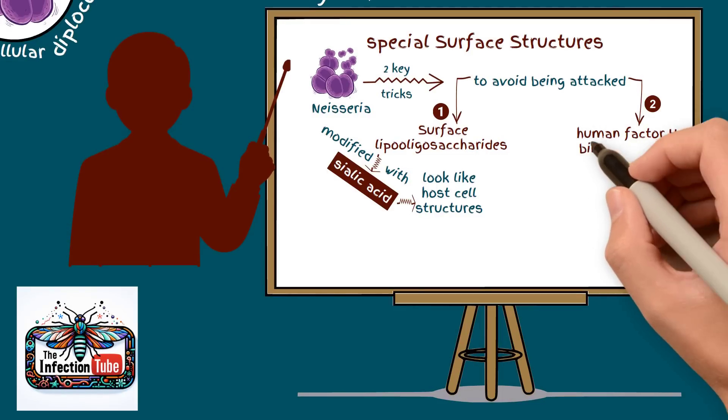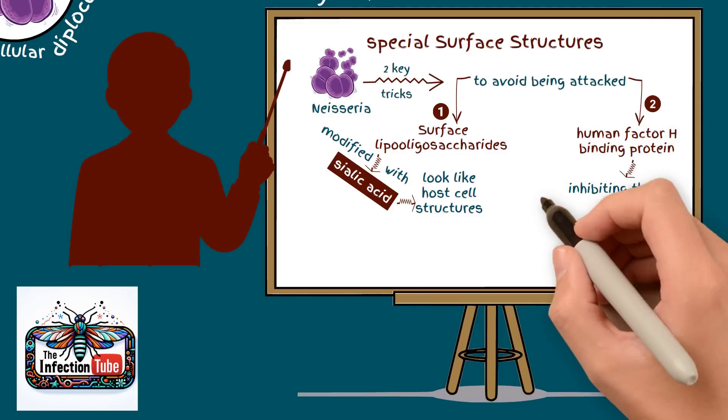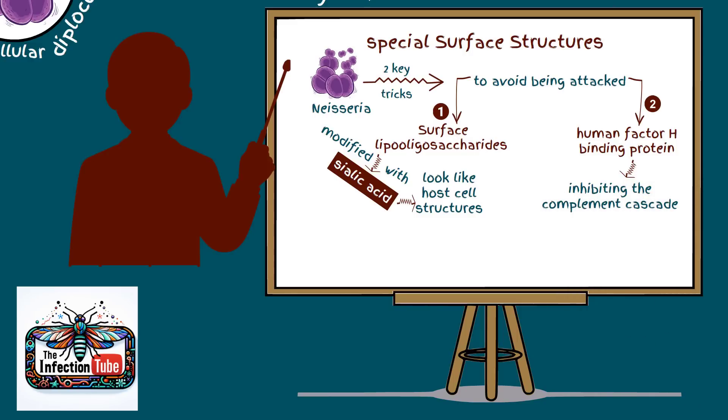2. Human factor H-binding protein inhibiting the complement cascade on the bacterial surface.